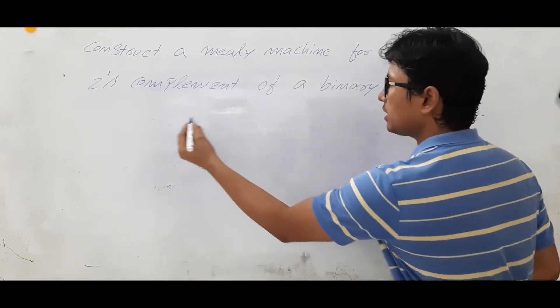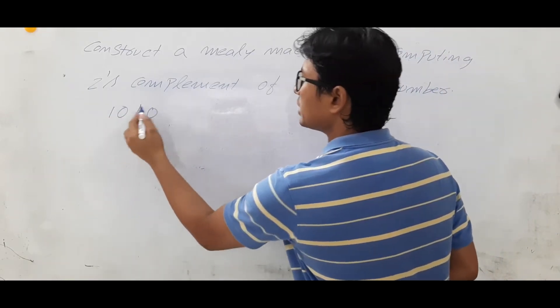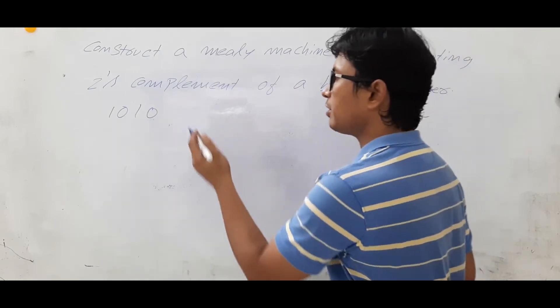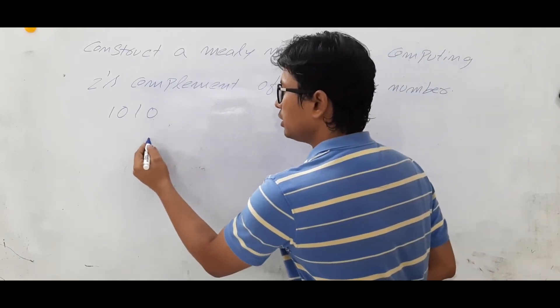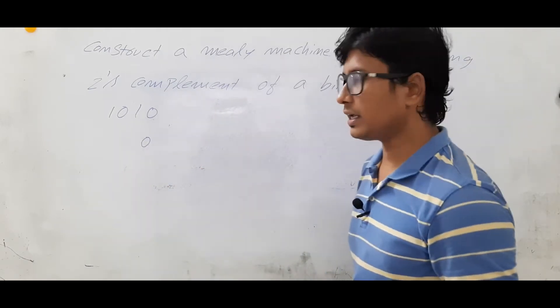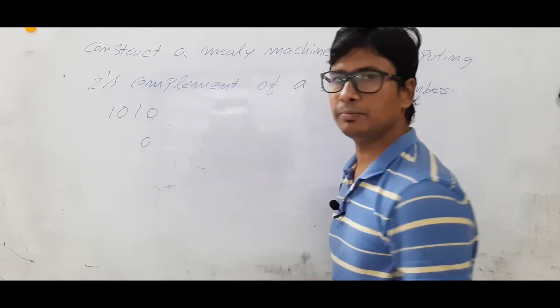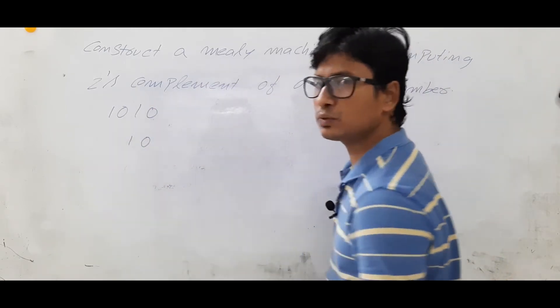So how I can calculate the 2's complement of a number 1010. First, reading from LSB, whenever you are reading any number of zeros, you will keep it as zeros. First one you will keep it as 1.